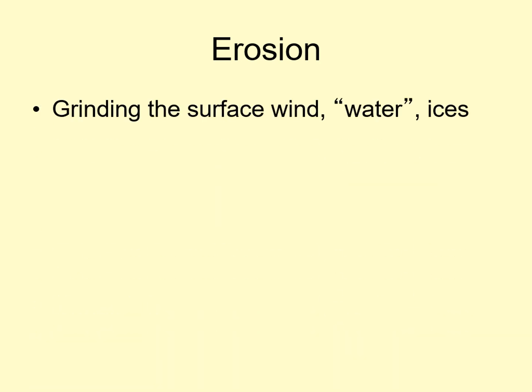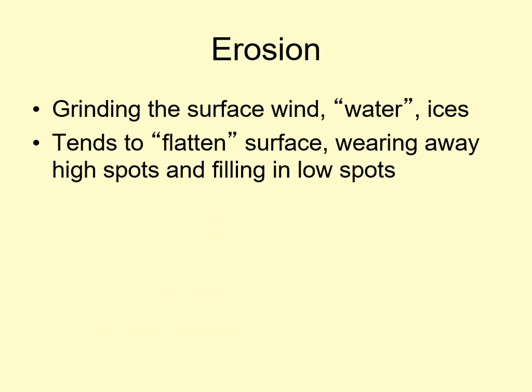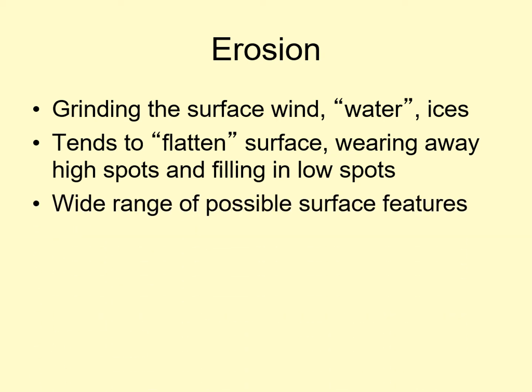The final surface process is erosion. Erosion is the wearing away of a surface due to wind, water or other liquids, or ices. In general, erosion tends to flatten the surface — it wears material away from high points and fills in the low spots. Erosion creates a wide range of different surface features, including river and glacial valleys, wind and wave-cut rock structures, sand dunes, floodplains, and deltas, to name just a few.